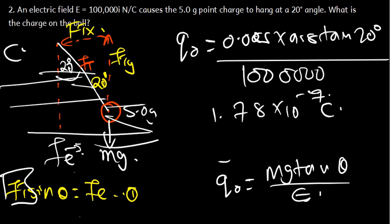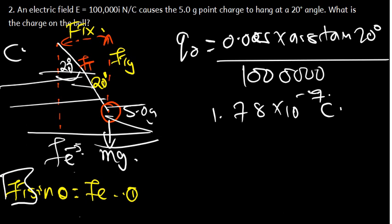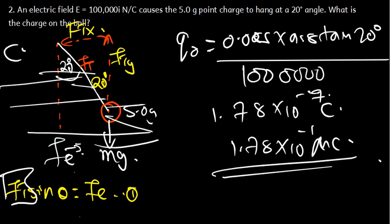We can also convert this answer to microcoulombs. To convert to microcoulombs, we multiply by 10 to the power of 6, giving us 1.78 times 10 to the power of negative 1 microcoulombs. That is the charge on the ball.